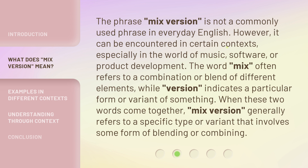The word "mixed" often refers to a combination or blend of different elements, while "version" indicates a particular form or variant of something. When these two words come together, "mixed version" generally refers to a specific type or variant that involves some form of blending or combining.